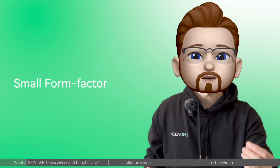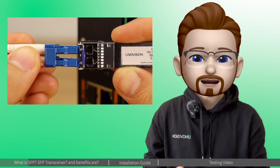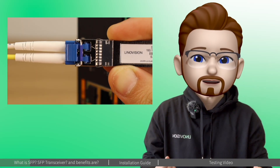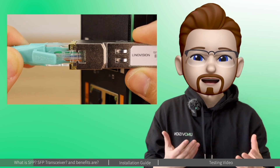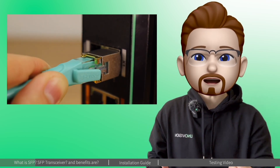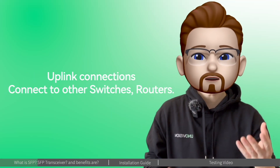Today we're going to talk about the SFP port. SFP stands for Small Form-factor Pluggable port. The SFP port is a compact slot designed to accommodate the insertion of the SFP transceiver, also known as the SFP module. It's hot-swappable, and allows you to connect a fiber optic or copper Ethernet cable to the switch. SFP ports are commonly used for uplink connections to other switches or network devices.